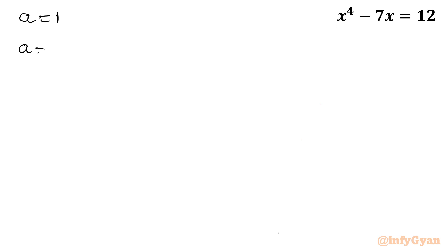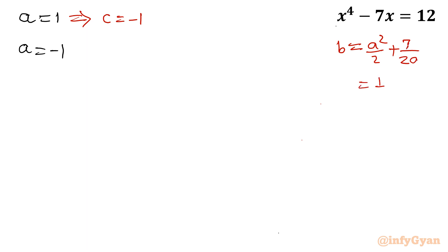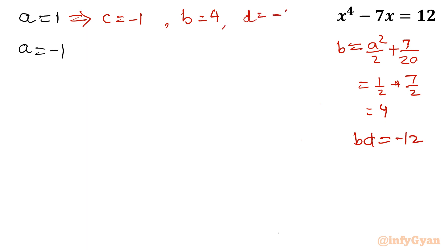For a = 1: c = -1, b = 1/2 + 7/2 = 4, and from bd = -12, d = -3. So the first set is a=1, b=4, c=-1, d=-3. For a = -1: similarly, b = -3 and d = 4. Both sets are ready.